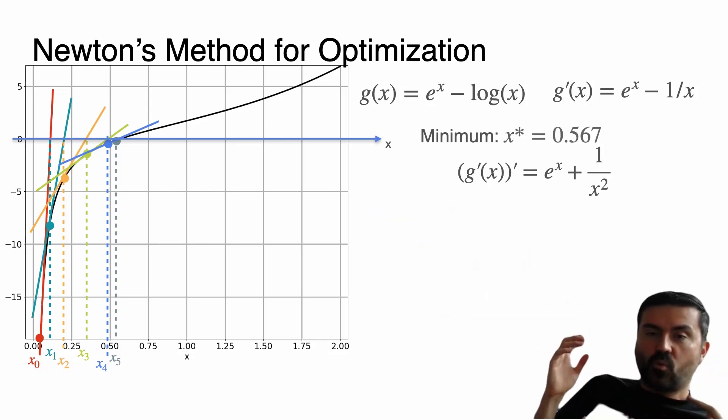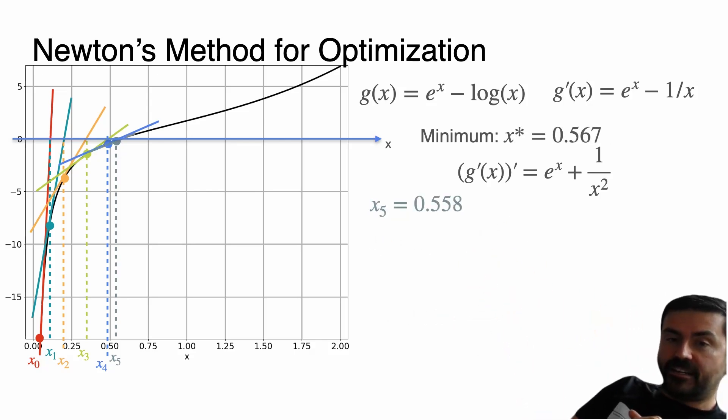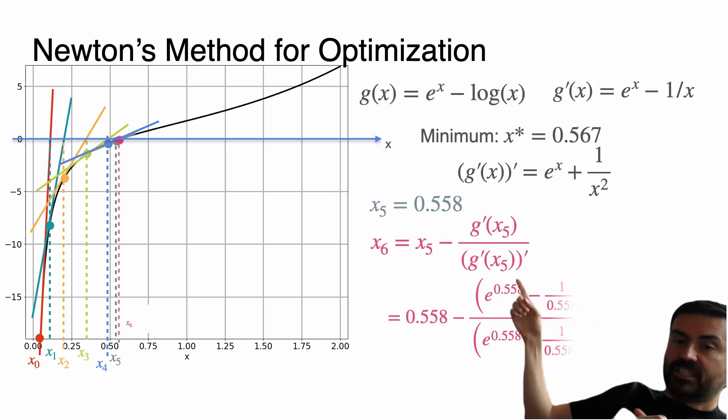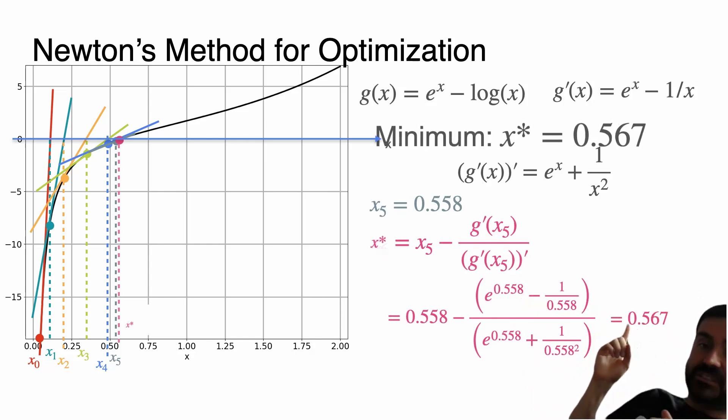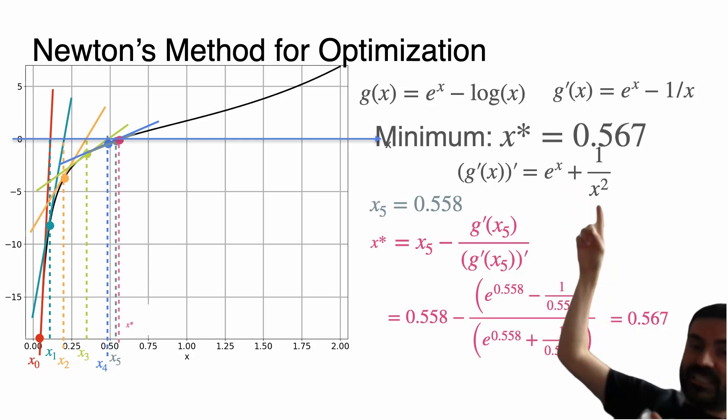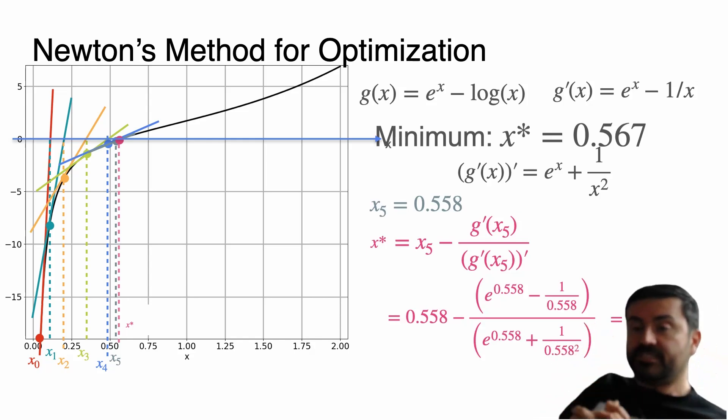Let's do one more. After one more, with x₅ = 0.558, then x₆ is going to be this over here which gives us the number 0.567. As you can see we got really close to the root of that function, to the place where the function hits zero in just a few iterations. So this is fantastic.